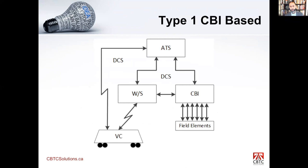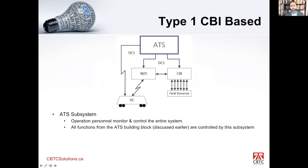Let's start with the first architecture, which is a CBI-based architecture. You have your ATS, your wayside unit, the CBI system, and the vehicle controller. This is your basic architecture of a CBI-based system. In this system, the ATS operates the entire line — it's your eyes and ears — and all functions of the ATS building block are covered by this subsystem in this architecture.